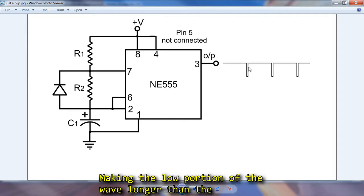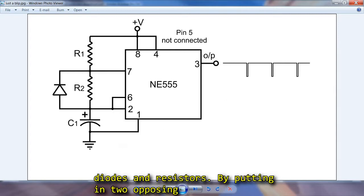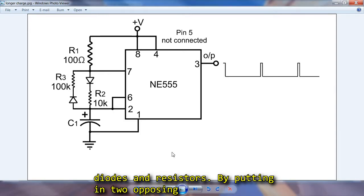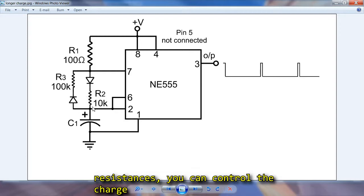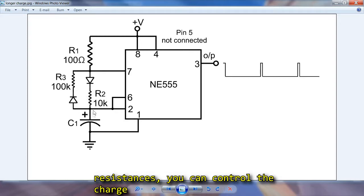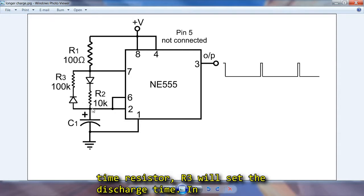Now making the low portion of the wave longer than the high is a little trickier, but it can be done with diodes and resistors. By putting two opposing diodes, feeding the capacitor through two different resistances, you can control the charge and discharge times. By making R1 fairly small, R2 will be the charge time resistor, R3 will set the discharge time.